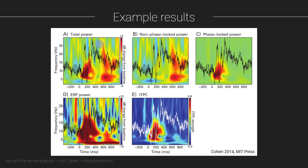To compute phase-locked power, you subtract the non-phase-locked power map from the total power map. The non-phase-locked content is consistent across those two plots, and what differs is the phase-locked part of the signal, shown here. This phase-locked TF power matches well with the ITPC — that's the inter-trial phase clustering of the total signal, not the non-phase-locked part. Just like the ERP, the ITPC is essentially all zero for the non-phase-locked signal.